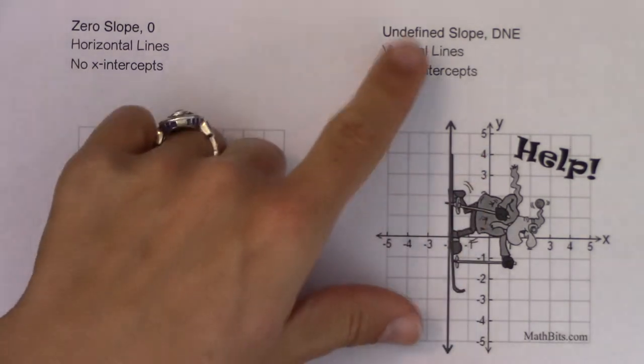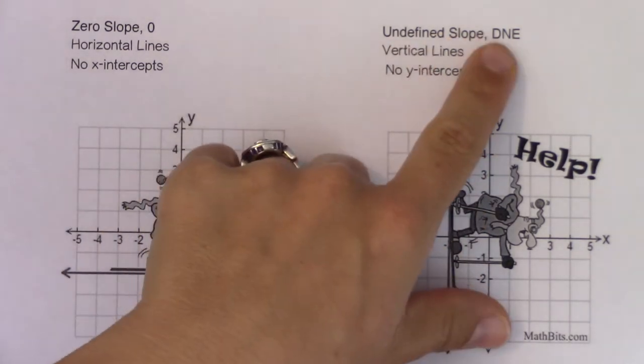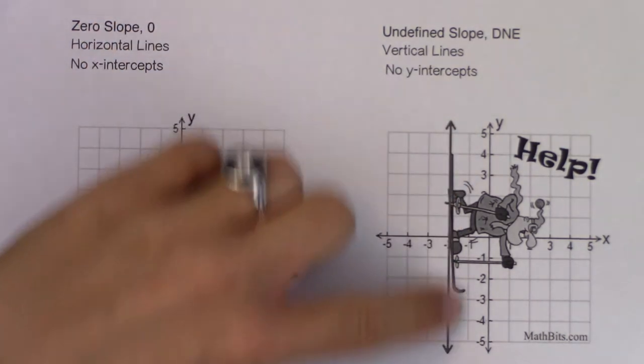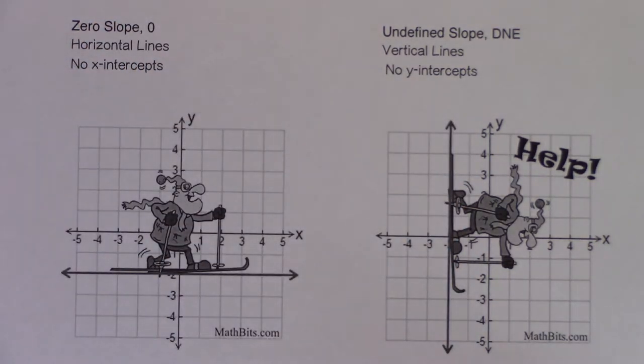And on the flip of that, if you have a vertical line, your slope is undefined, or you might say DNE for does not exist, and it has no y-intercepts because it never touches the y-axis.